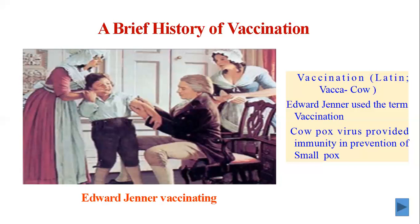Over the following decades, immunization against smallpox using cowpox became widely accepted in Europe. While Jenner at his time neither understood nor could explain the biological basis of vaccination, his concept was successful and provided protection from smallpox apparently due to cross-immunity between smallpox and cowpox.